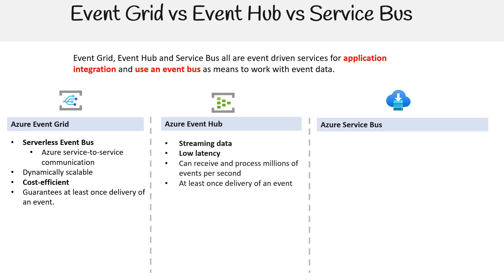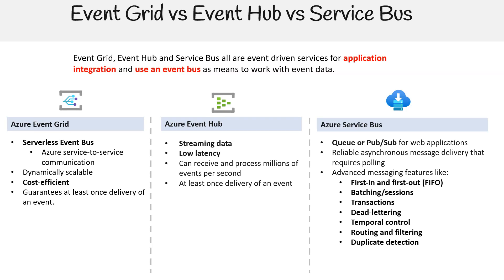Azure Service Bus supports both queues and publish-subscribe patterns, making it suitable for a range of web applications with reliable asynchronous message delivery that requires polling. It includes advanced messaging features like first-in first-out, batching, sessions, transactions, dead-lettering, temporal control, routing and filtering, and duplicate detection. It guarantees at least once delivery of a message and offers an optional feature to ensure messages are delivered in sequence.